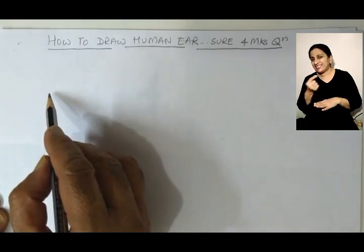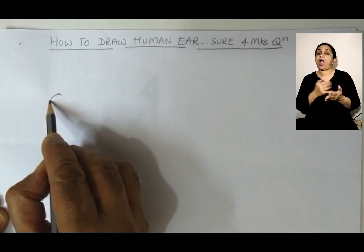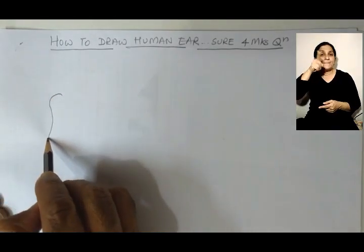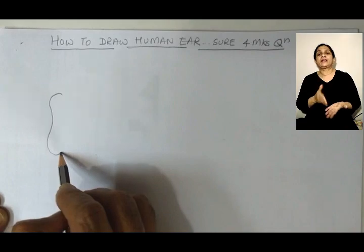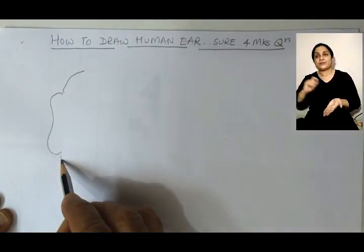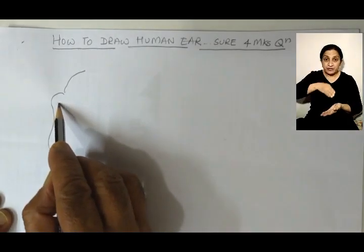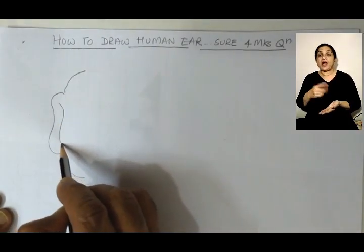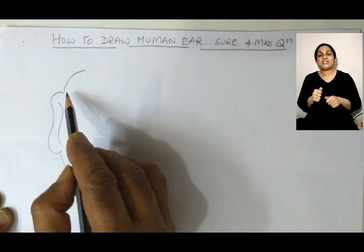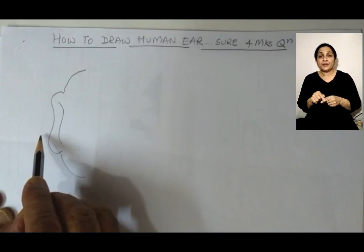First, you draw the pinna — this is the one which collects the sound waves from outside. Make a small curve here like this, drawing a shaped line here. The pinna is collecting the sound waves.